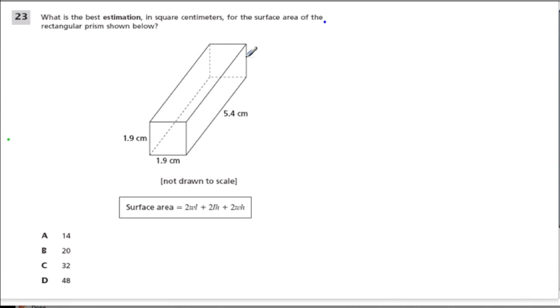We have a rectangular prism, which is essentially a box. I give you those dotted lines back here indicating that we're seeing through this box. They're asking what is the best estimation—keyword estimation—in square centimeters. Square centimeters fit on a surface like tiles fit on a floor, and therefore they're talking about surface area.